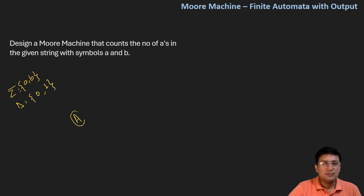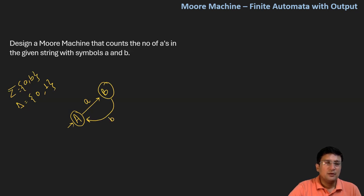Since I have to count A's only in the given string, let's say I'm moving and I am at state number A. And if A comes, let's move to state number B. And if B comes, let's come back to state number A. If B comes at state A, let's remain at A, because that is not our desired state.